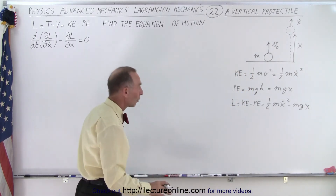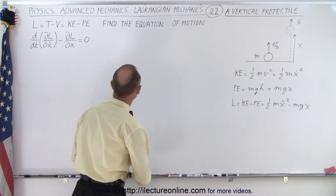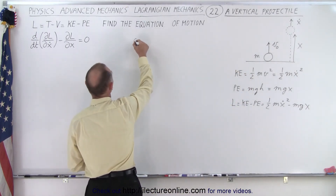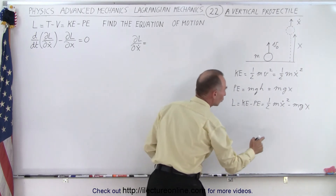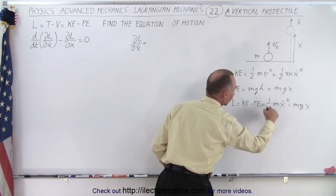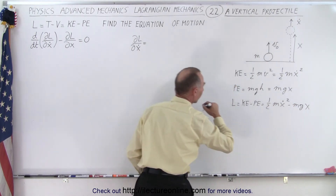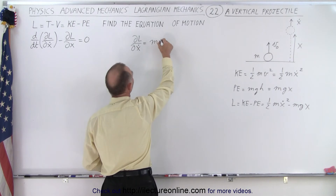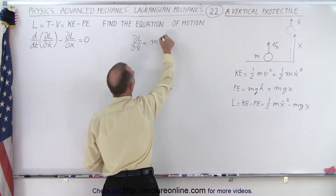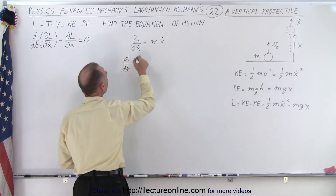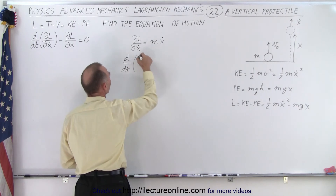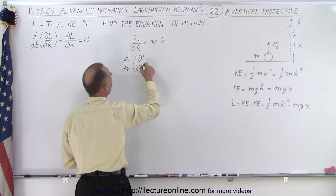Now we're ready to find the equation of motion. The first thing we're going to do is find the partial derivative of the Lagrangian with respect to x-dot. Notice the potential energy term goes to zero; we get two times a half which is one, giving us mx-dot.